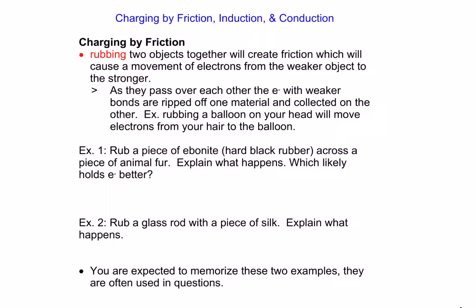Today we're going to look at how we can create charge on an object and also how to move charge from an object through induction or conduction. So we have three different methods. The first one is friction, which is how we can actually create a charge — it basically means something rubbing together.